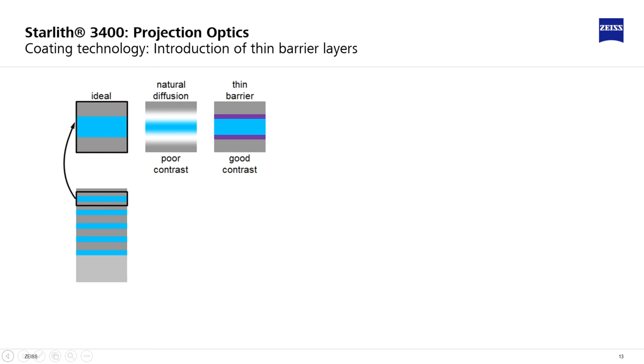Such barrier layers consist of elements with low EUV absorption like boron, carbon, silicon and compounds of these. The gain of reflectance depends critically on the thickness of the barrier. If no barrier is present, the natural diffusion of molybdenum and silicon leads to a mixture zone with a certain thickness leading to a certain index contrast loss.